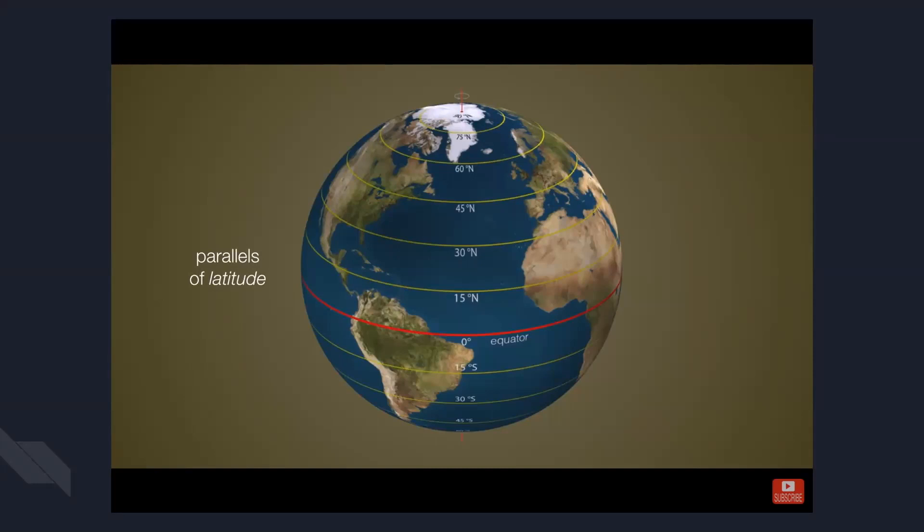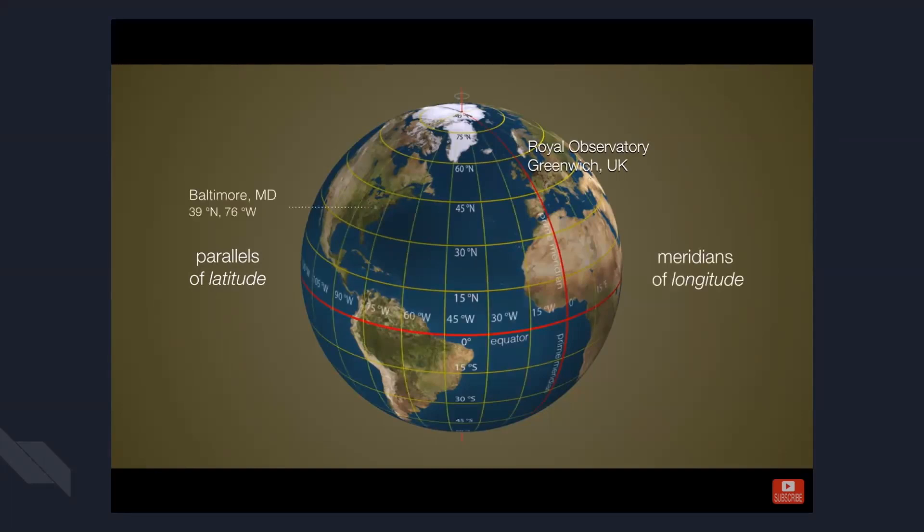Now, in addition to parallels of latitude, measuring north and south, we also want to be able to measure from east to west. So by international agreement, the prime meridian is an imaginary line that goes through the North Pole, through Greenwich, England at the Royal Observatory, all the way down to the South Pole. And then we can simply measure east or west in terms of meridians of longitude. So, for example, here in Baltimore, we are at 39 degrees north latitude, 76 degrees west longitude. A southern example would be Cerro Paranal in Chile, that's 24 degrees south latitude or 70 degrees west.